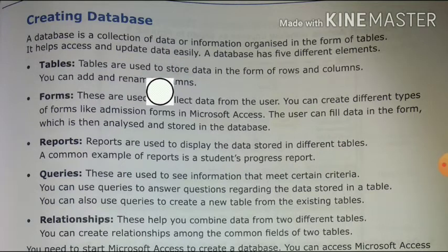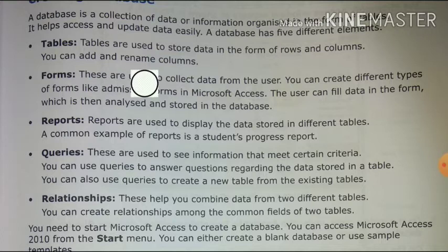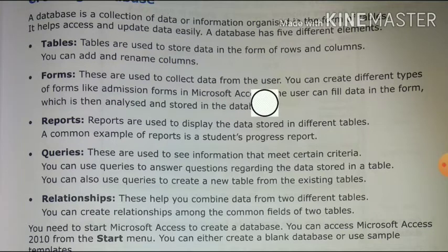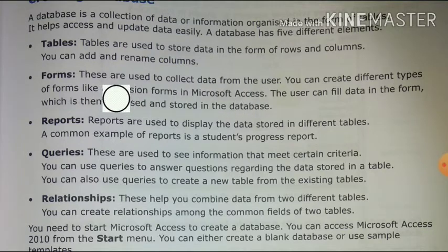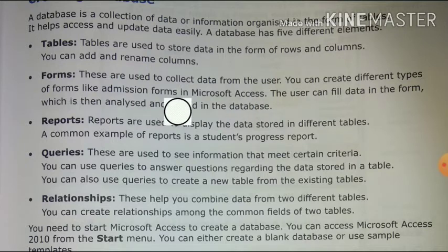First element: Tables. Tables are used to store data in the form of rows and columns. You can also add and rename columns. Second element: Forms. These are used to collect data from the user. You can create different types of forms, such as admission forms, in Microsoft Access.